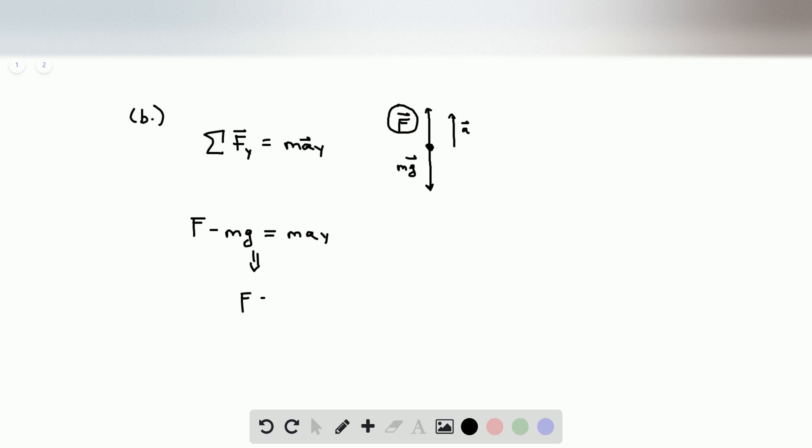This means that F is equal to m times g plus a, which is equal to 210 kilograms times 9.8 for g, and then 4610 for a, which is what we found in part a.